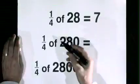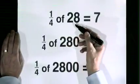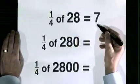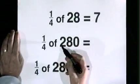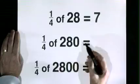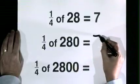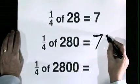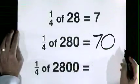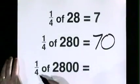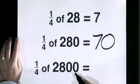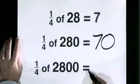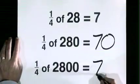A quarter of 28 is 7. A quarter of 280 is 70. A quarter of 2800 is 700.